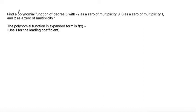This problem is to find a polynomial function of degree 5 with negative 2 as a zero of multiplicity 3, 0 as a zero of multiplicity 1, and 2 as a zero of multiplicity 1. The polynomial function in expanded form is what we're supposed to write as the answer, and to use 1 for the leading coefficient.